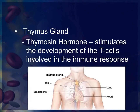The thymus gland is a piece of flesh that lies on top of the heart. It produces the thymosine hormone, and its job is to stimulate the development of T cells, which are the primary cells involved in the immune system and the immune response.